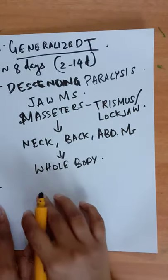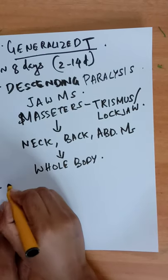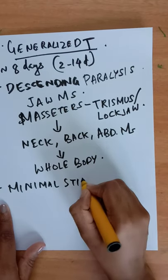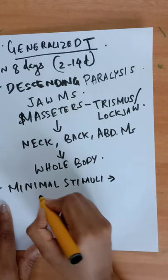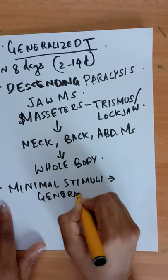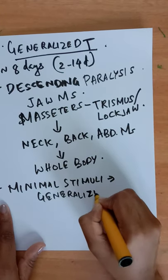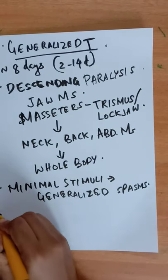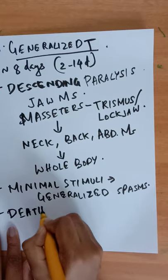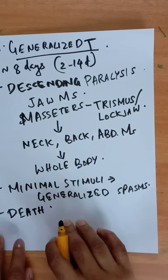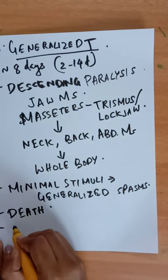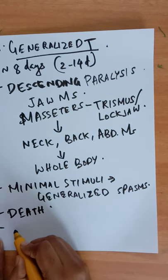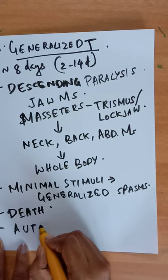As the disease progresses, minimal stimuli can cause generalized spasms and later can lead to death. Typically, the sensorium is preserved. There is difficulty in swallowing and autonomic instability can occur.